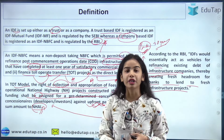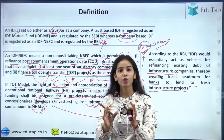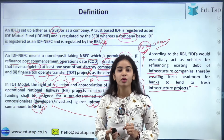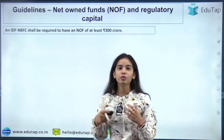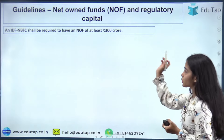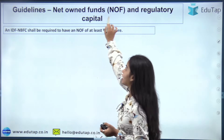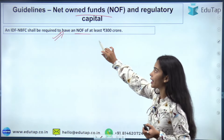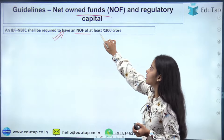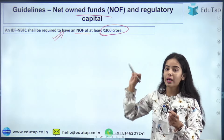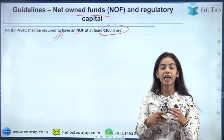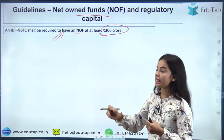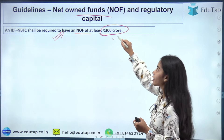After understanding the definition and what IDF NBFCs do, let's come to the guidelines. The net owned fund of an IDF NBFC shall be required to be at least 300 crore.